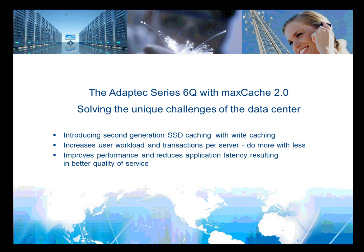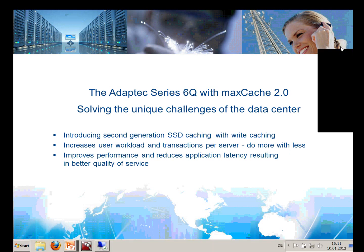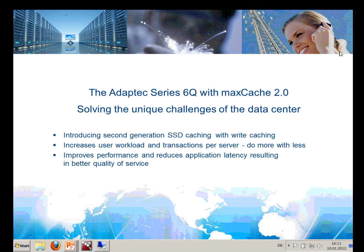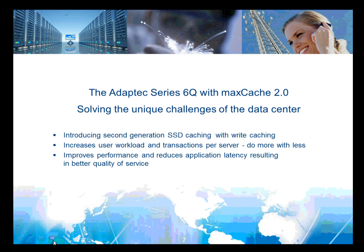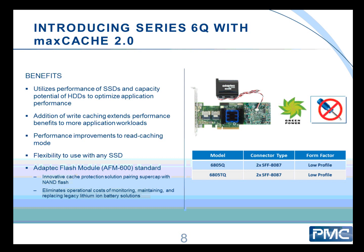Now to talk about the Series 6 with MaxCache 2.0. These products mostly came about because of work we're doing with data centers. This is our second generation SSD caching. The first generation was SSD read caching only. The second generation now includes optimized SSD read caching and also our first generation of SSD write caching. The whole concept is to improve transactions — do more with less hardware while reducing latency, which is very important to many customers.